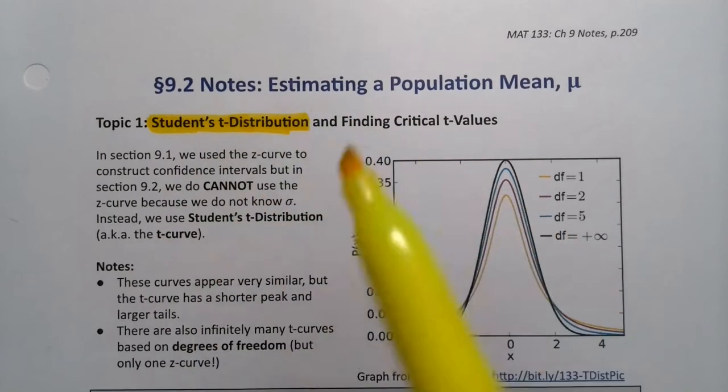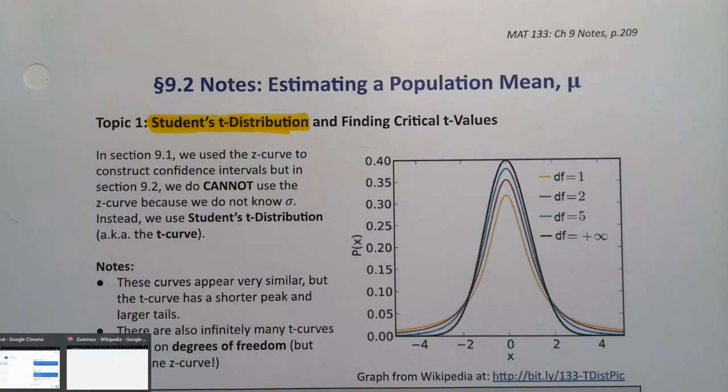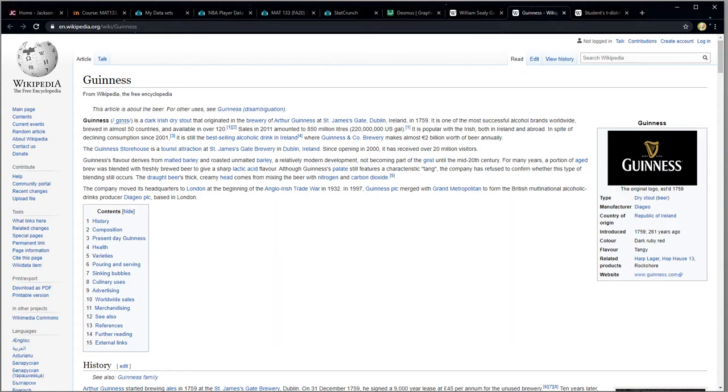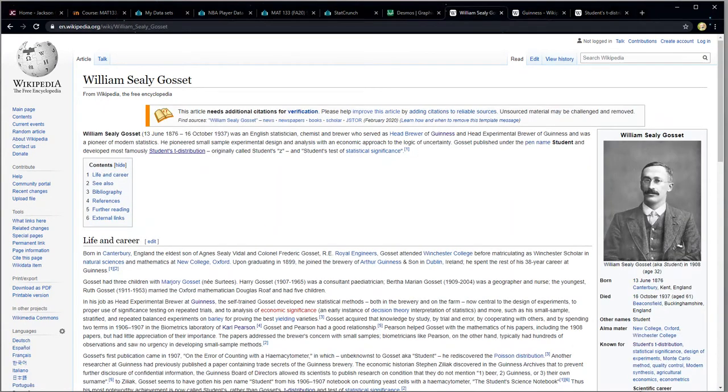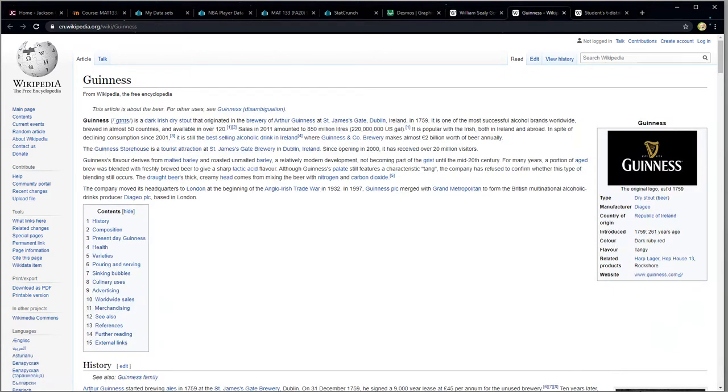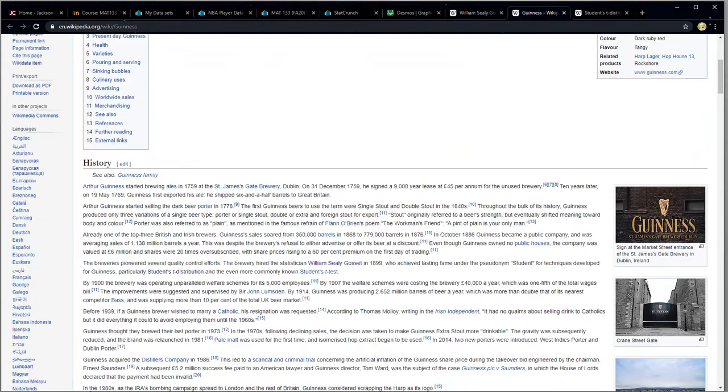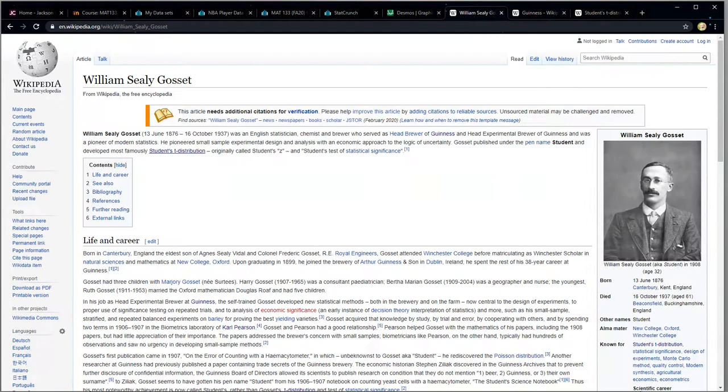To do that I need to tell you the tale of William Seeley Gossett. So William Seeley Gossett was a brewer chemist, an English statistician, and he was working for Guinness, the company that makes beer, as their head brewer.